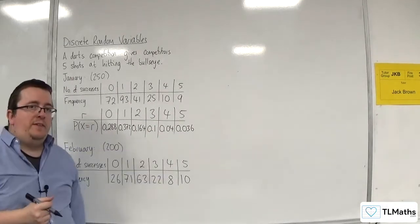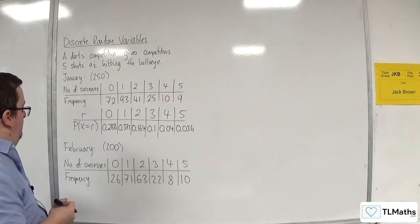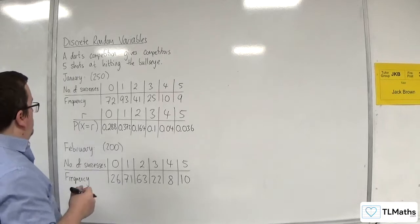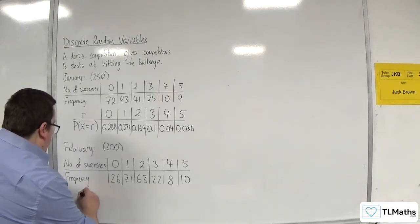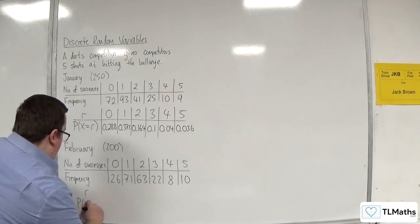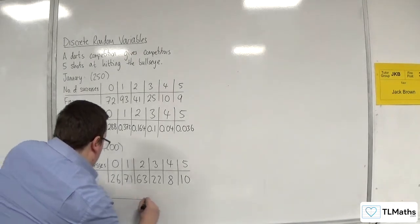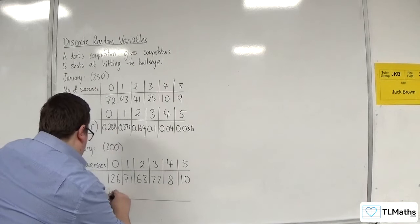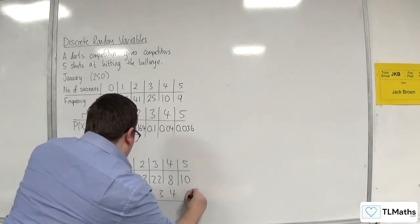Here we have our probability distribution for January. Then for February, let's have R and probability of Y being equal to R: 0, 1, 2, 3, 4, 5.